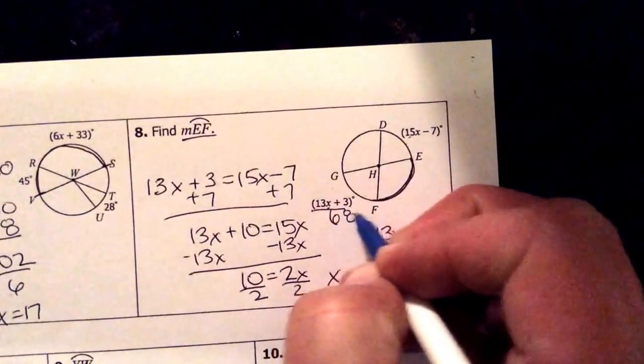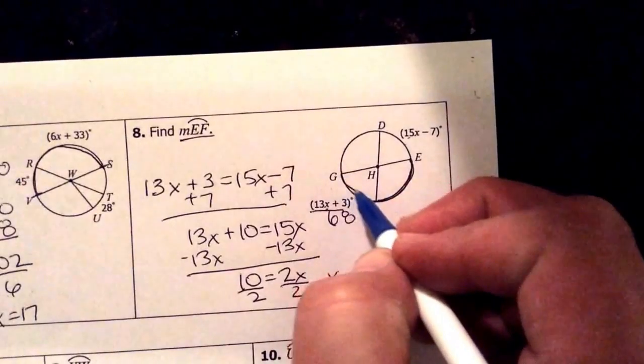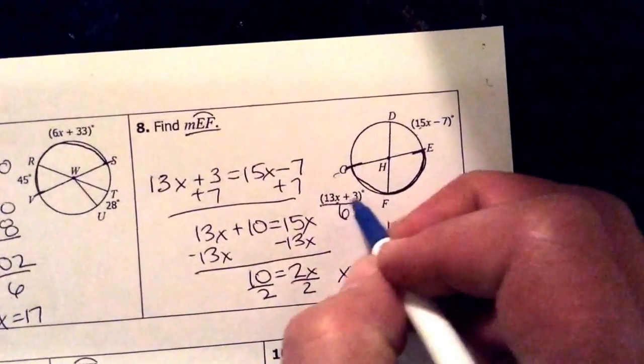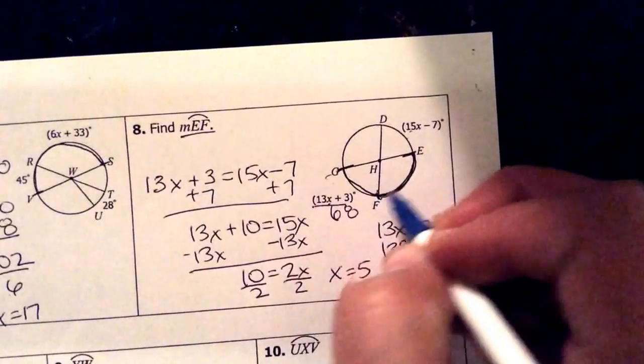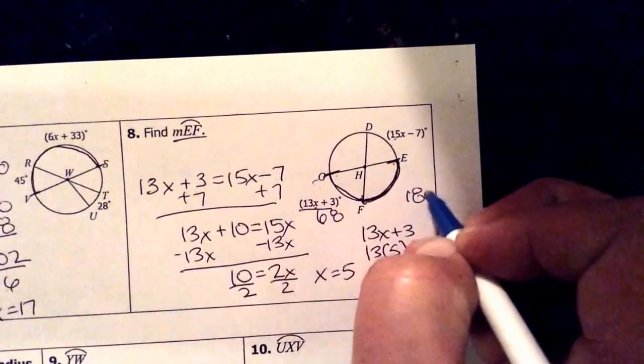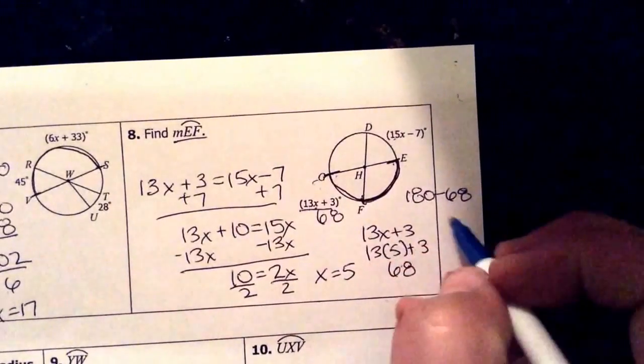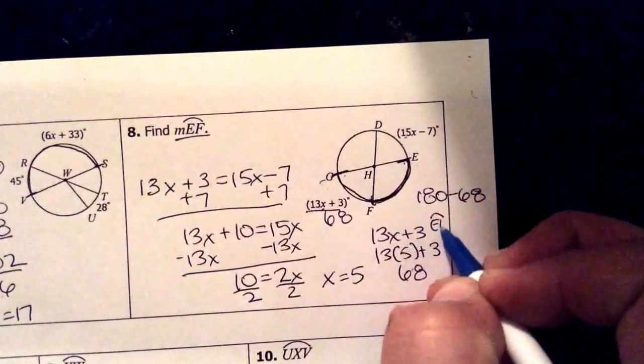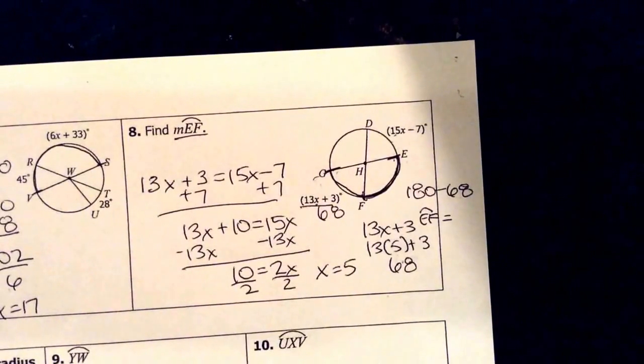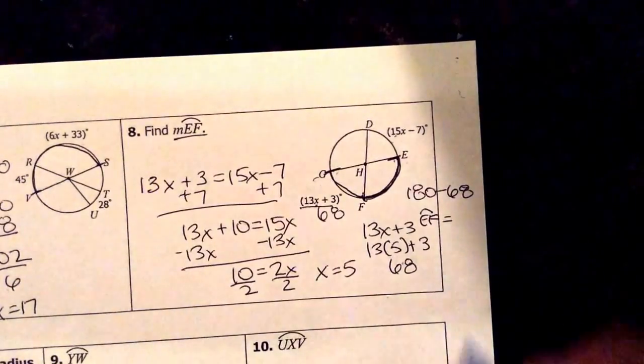Now if I know this arc is 68, what I do know is that from G to E again I have a semicircle. So in order to figure out what E to F is, I know that's 180 take away 68. So EF is 112 degrees.